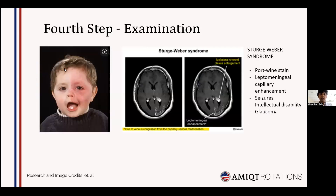A port-wine stain on the left side of the face with choroid plexus enhancement on MRI is classic for Sturge-Weber syndrome, presenting with port-wine stain, leptomeningeal capillary enhancement, seizures, intellectual disability, and glaucoma. These patients require continuous monitoring, neurosurgical evaluation, treatment of glaucoma, and rehabilitation for intellectual disability.